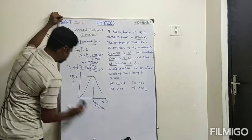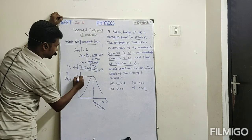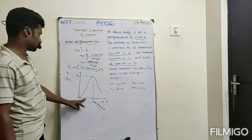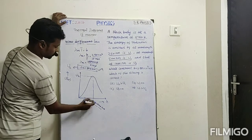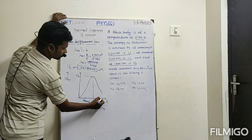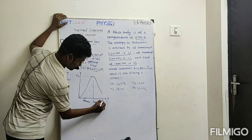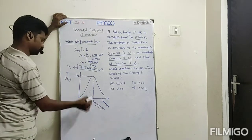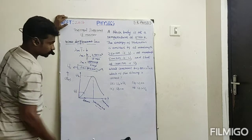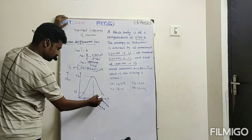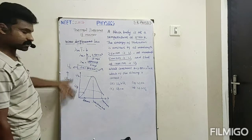Since the peak is at 500 nanometer (U2), the value at 250 nanometer is on the left side of the peak — that is U1. Similarly, 1000 nanometer is on the right side of the peak — that is U3. So the corresponding energy value for 250 nanometer is U1, and for 1000 nanometer it is U3.